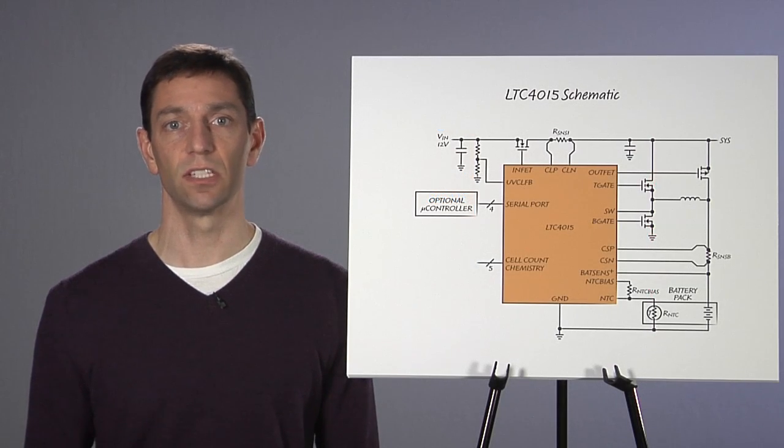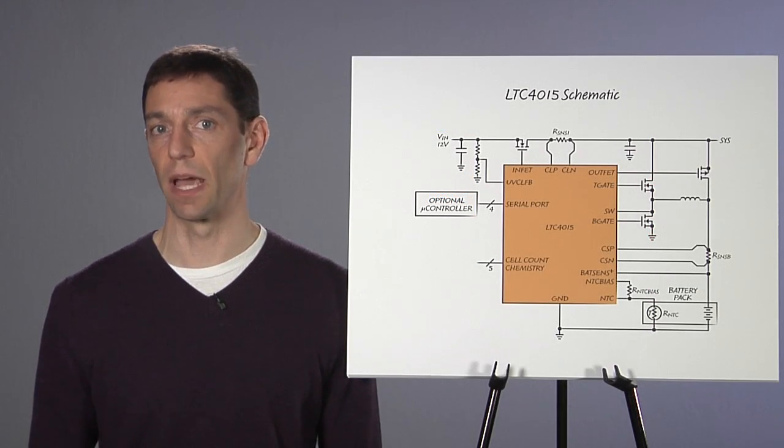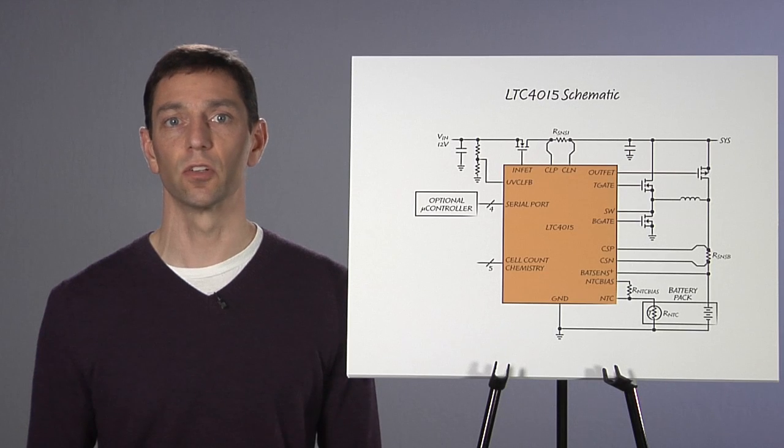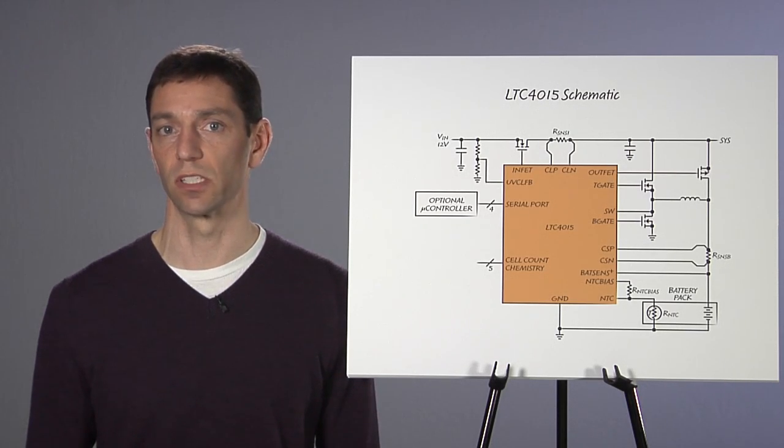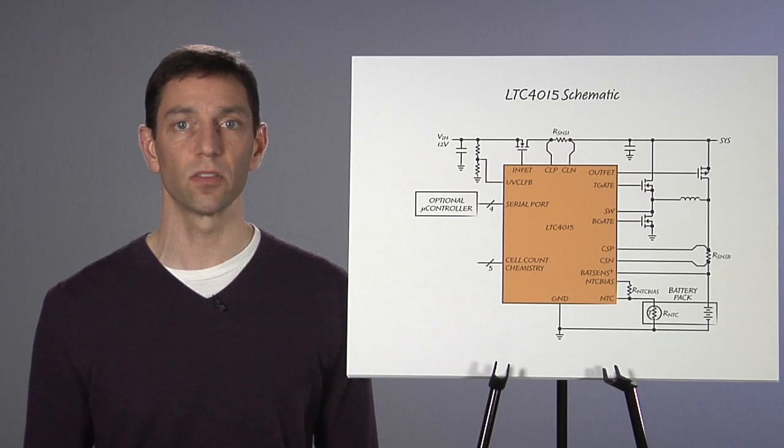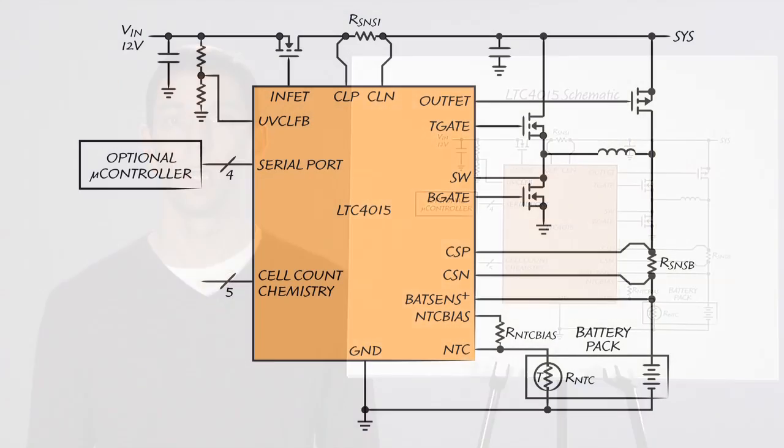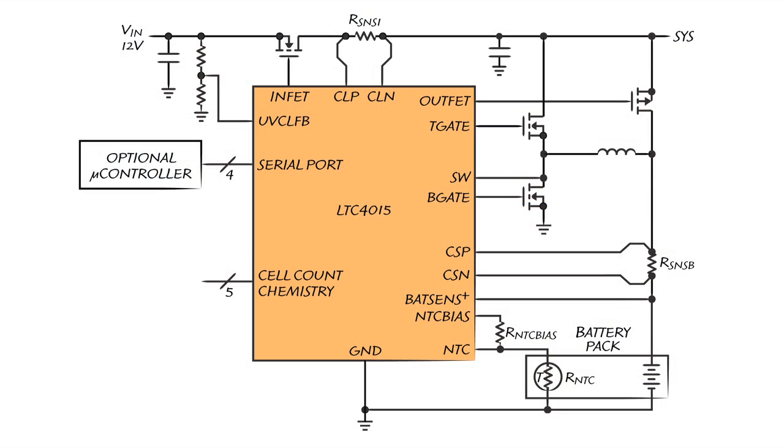The core function of the LTC4015 is to charge batteries. Each of the internal charge algorithms controls constant current to better than 2% accuracy and constant voltage to better than 1% accuracy. Precision internal current sense amplifiers allow the use of a small 32 millivolt full-scale charge current sense voltage, which minimizes power dissipation without compromising charge current accuracy.